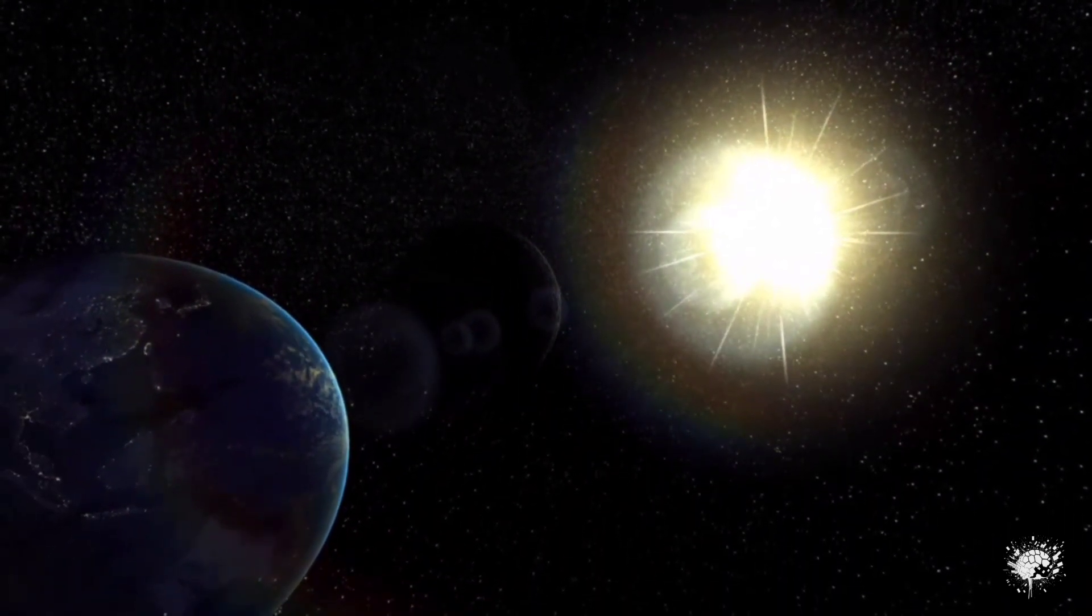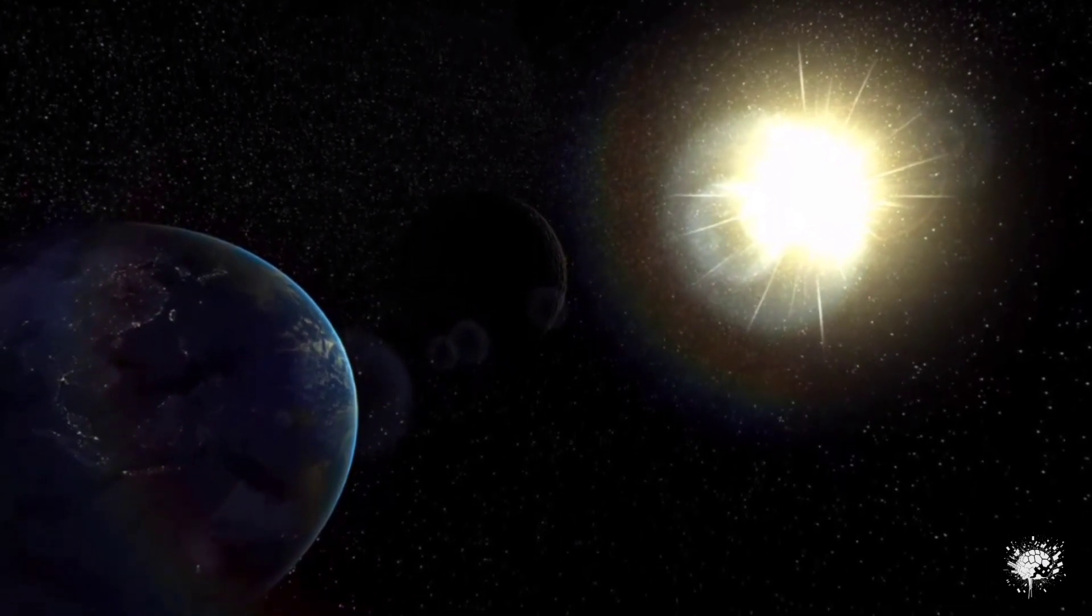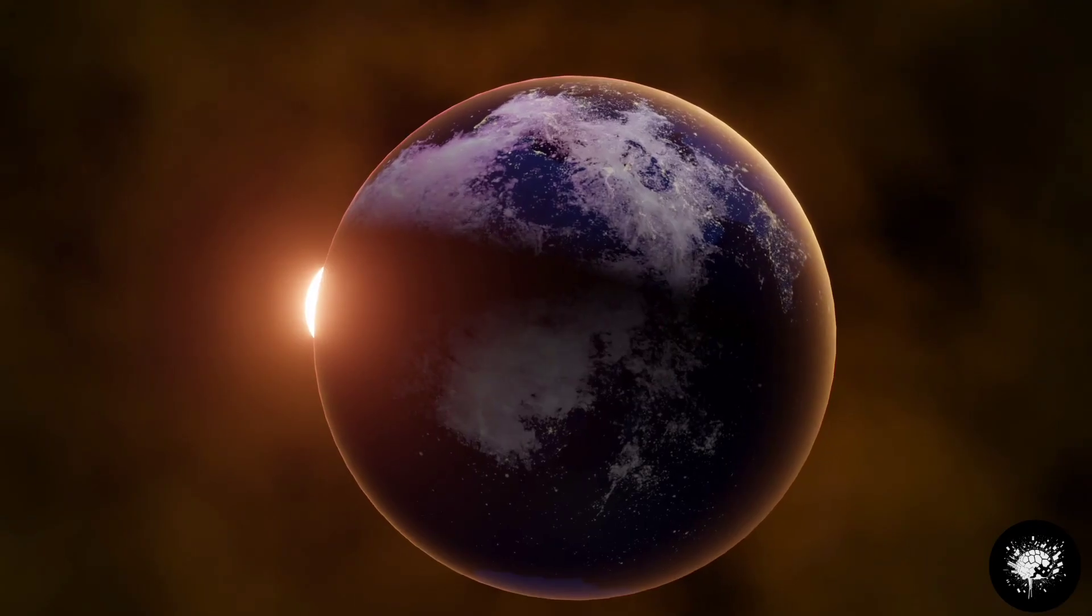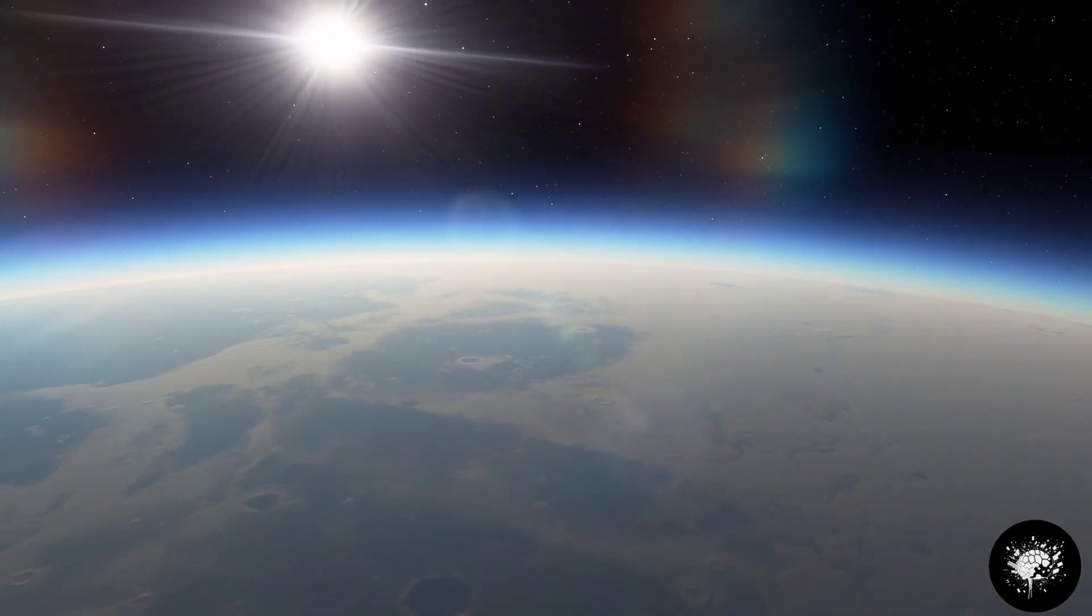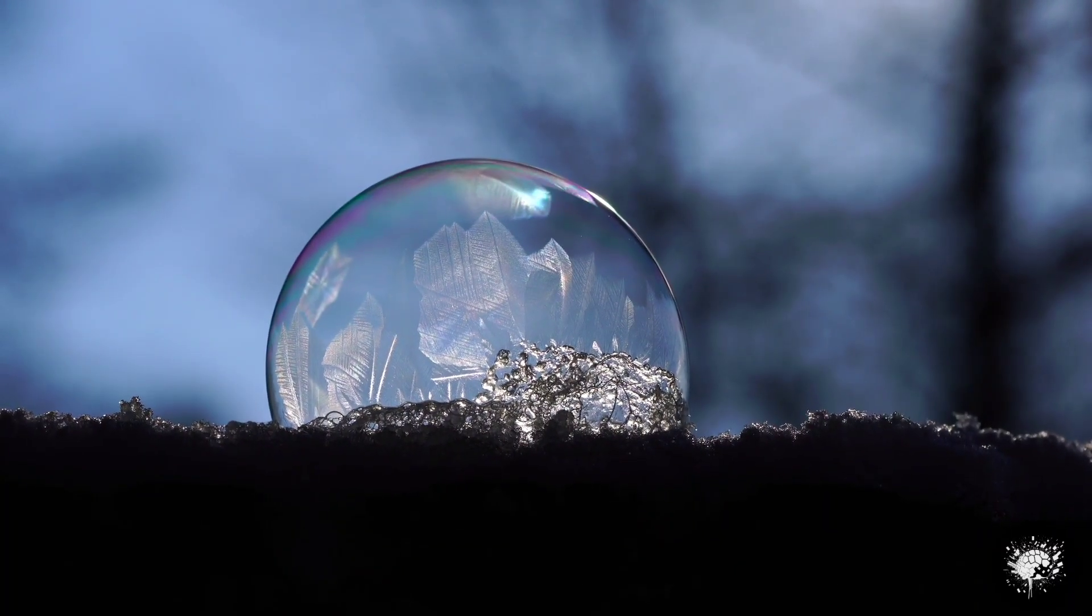It wouldn't take long to notice that daylight is significantly diminished, and as we approach the orbit of Mars, we'd receive only 50% of the sunlight. Thankfully, our atmosphere would act as a protective shield, preventing an immediate drop in temperature.